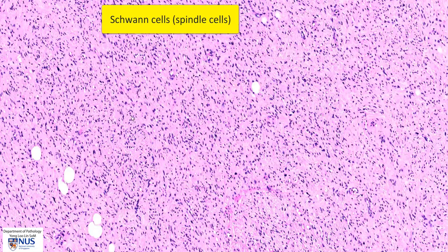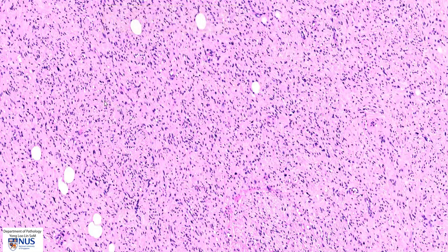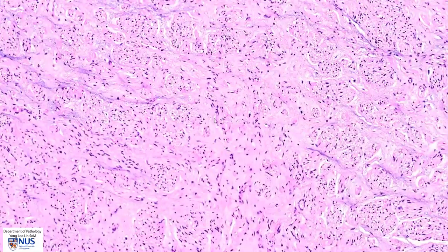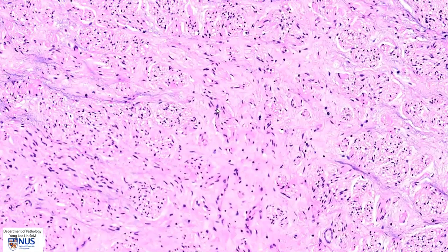Let's have a look at another section from the same tumor, which shows the ganglion cells better. Again, we can see the spindled Schwann cells with very slender, long, wavy nuclei.